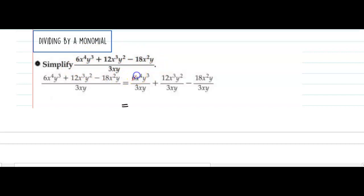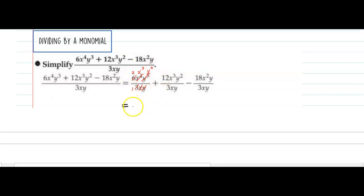Our goal is to make this expression look a little bit simpler. When I do that, 6 and 3 can cancel. Remember, we're just taking our properties of exponents and applying them. If I have four x's in the numerator and one in the denominator, those are going to cancel to leave three x's in the numerator. y cubed over y — if I have three on top and one on the bottom, those are going to cancel leaving two in the numerator. So for the first term of my numerator after dividing, I end up with this.